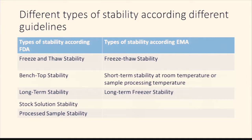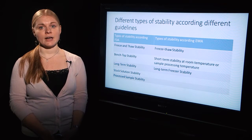The FDA guide distinguishes the following types of stability: freeze and thaw stability, bench-top stability, long-term stability, stock solution stability, and processed sample stability. This guideline distinguishes between the analyte stability in calibration and stock solutions and stability in the sample matrix, and stresses the importance of storage conditions, matrix and container system on stability besides the intrinsic properties of the analyte itself.